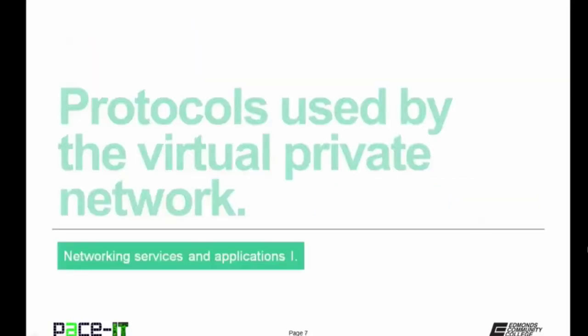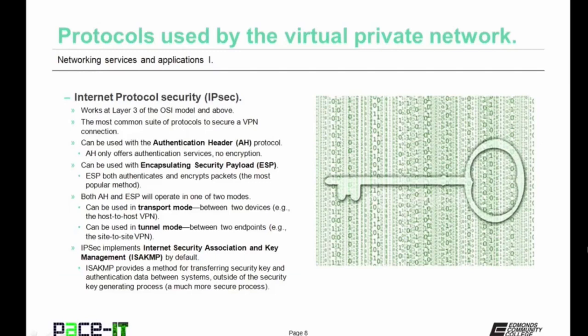It's time to discuss some protocols used by the virtual private network. The big protocol for VPNs is called Internet Protocol Security, IPsec, which isn't actually a protocol in itself but a whole set of protocols. IPsec works at layer three of the OSI model or above, and is the most common suite of protocols used to secure a VPN connection. IPsec can be used with the authentication header protocol, or AH, which only offers authentication services but no encryption.